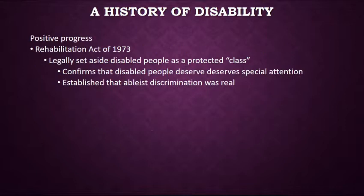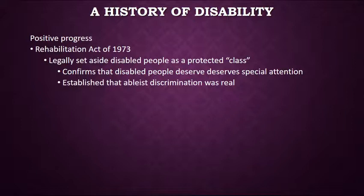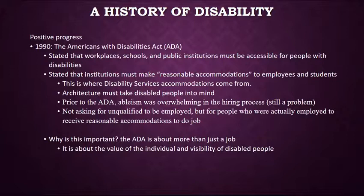In 1973, the Rehabilitation Act of 1973 came into effect. This legally set aside disabled people as a so-called protected class — not socioeconomic class, but a group of people deserving special attention and legal treatment. This confirmed that disabled people deserved certain things and established effectively that ableist discrimination was a real thing — that sometimes disabled people are being abused. That was not even acknowledged as a society prior to 1973, and it was an important factor in laying the groundwork for the Americans with Disabilities Act, the ADA.